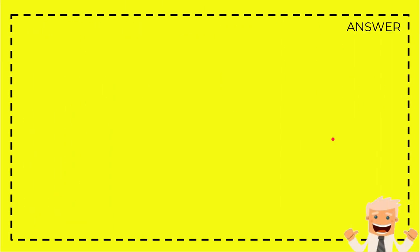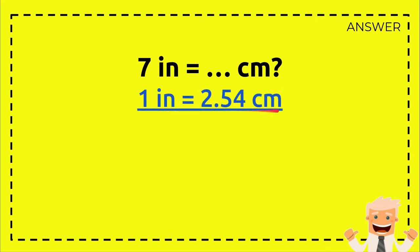Okay, now here is the answer section. First you need to write the question again: 7 inch equals how many centimeters? And here is the formula, just like what I showed you before, 1 inch equals 2.54 centimeters.